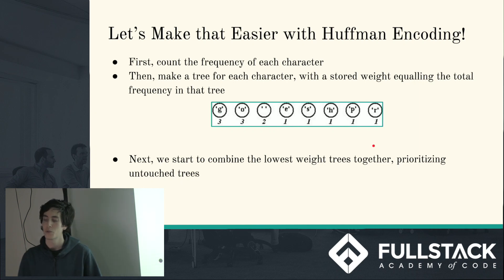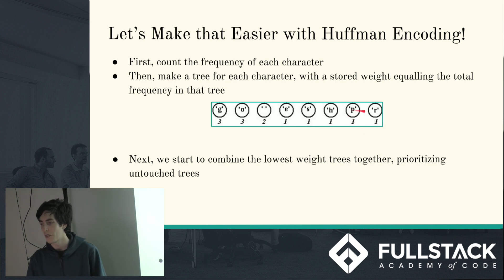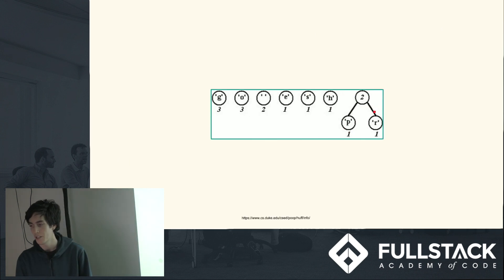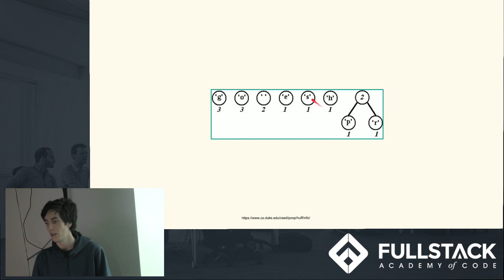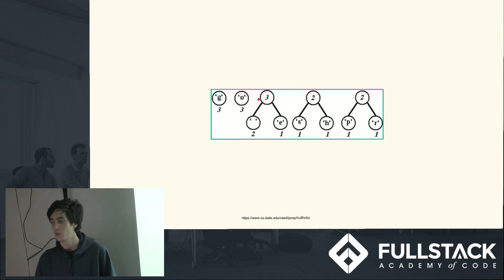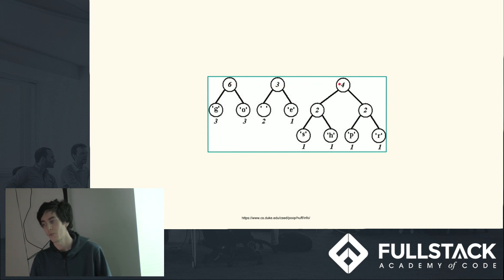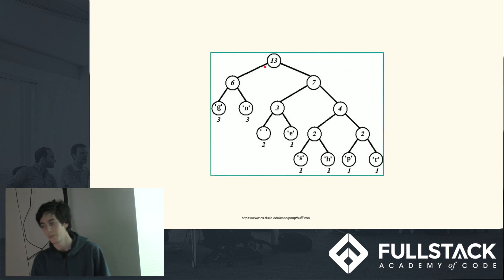Then we put all these into a priority queue and start combining together the lowest weight trees, prioritizing untouched ones. So we combine P and R together into a weight-2 tree, then S and H, then E and the space, then the two 2s, then the two 3s, then the 3 and the 4, then the 6 and the 7. Now we have a complete tree.